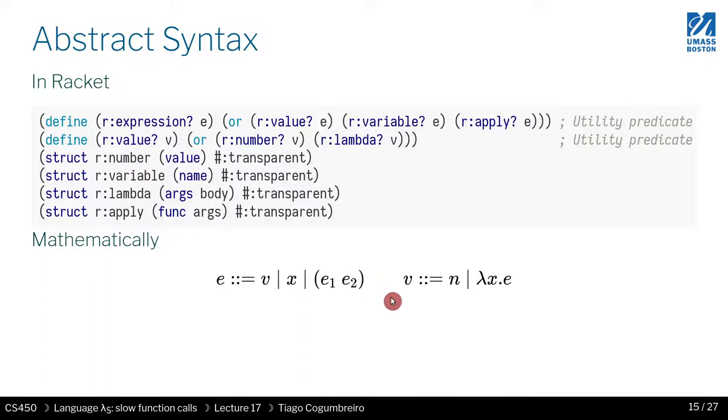What is the value? Right now we're only supporting two kinds of values. First one is a number and the second one is a lambda, so a function declaration. This is all our language - the only thing it has. We have v representing numbers, we have variables, we have function calls, we have lambdas as well. That's everything we have.